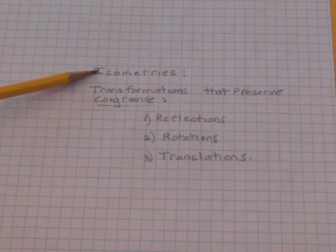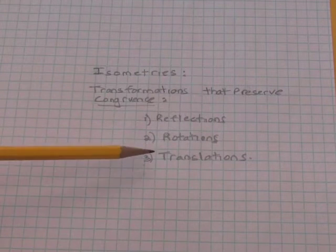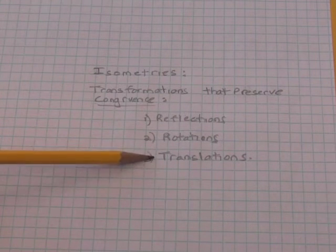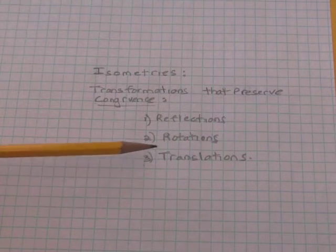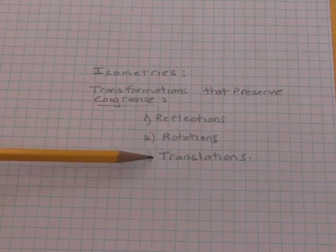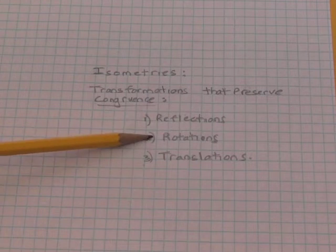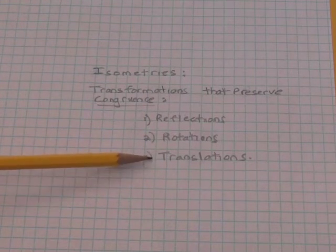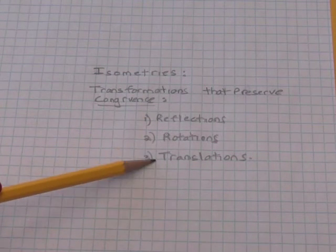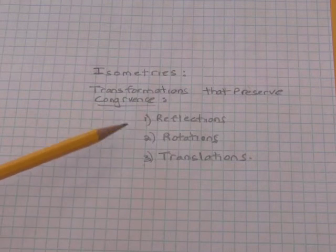In this video, we're looking at isometries. We're looking at the final type of isometry, a translation, and we're also looking a little bit at the algebra for using all these rules to do transformations for reflections, rotations, or translations. Remember that these are special because they preserve congruence.